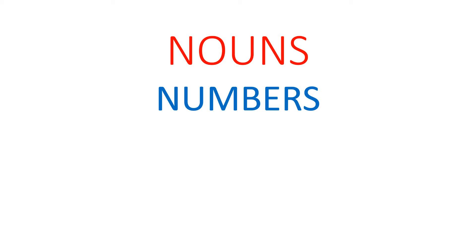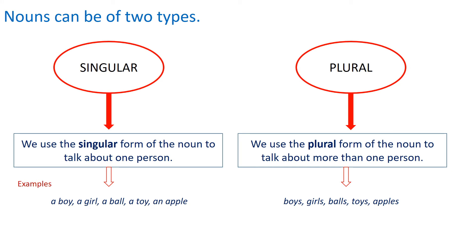Hello students, welcome to your e-learning classes of Asensore North Point School. Today we are going to study the second chapter from your Collins English grammar book, and as you can see, the name of the chapter is Noun Numbers. Nouns can be of two types: singular and plural. We are going to study the definition of singular nouns and plural nouns.